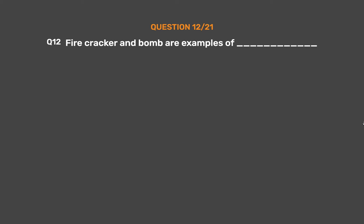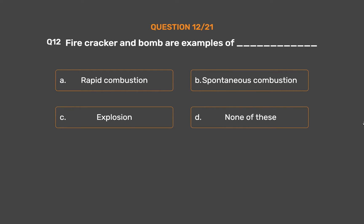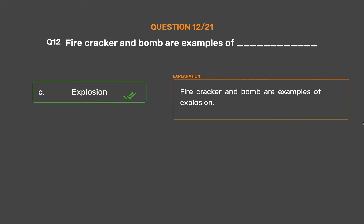Question number 12: Firecracker and bomb are examples of _____. Option A: Rapid combustion. Option B: Spontaneous combustion. Option C: Explosion. Option D: None of these. The correct answer is Option C: Explosion. Firecracker and bomb are examples of explosion.